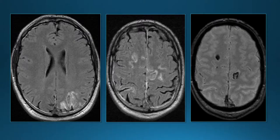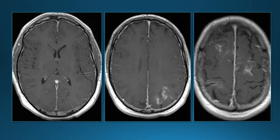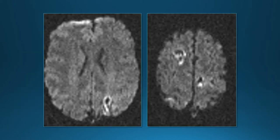On MRI FLAIR images, there is high signal along gyri and into some sulci, with areas of hemorrhage on gradient echo images. Post-contrast T1 shows some linear areas of enhancement, some along the pial surface of the brain. Looking carefully, we can see a filling defect in the sagittal sinus. Diffusion-weighted images in this case show not much restricted diffusion — just small areas associated with hemorrhage.